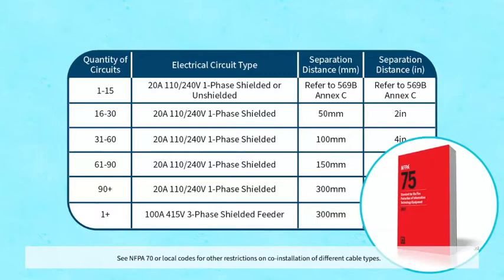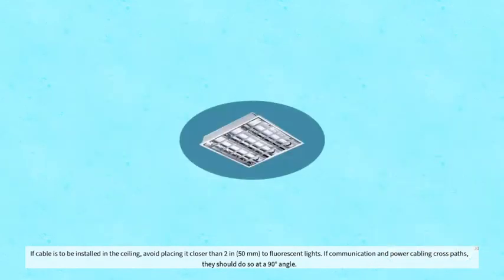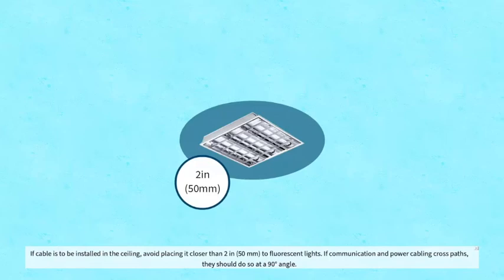See NFPA 70 or local codes for other restrictions on co-installation of different cable types. If cable is to be installed in the ceiling, avoid placing it closer than 2 inches or 50 millimeters to fluorescent lights. If communication and power cabling cross paths, they should do so at a 90 degree angle.